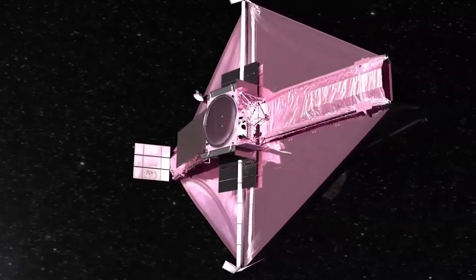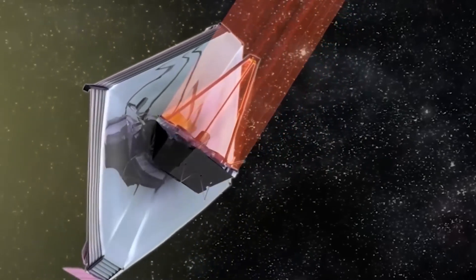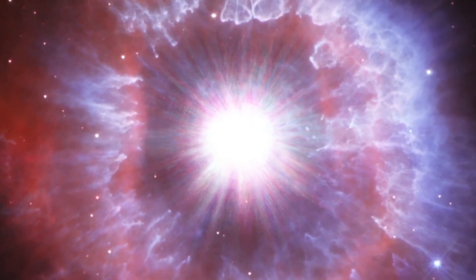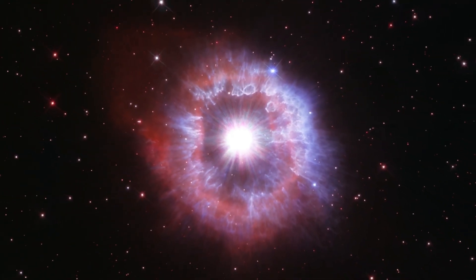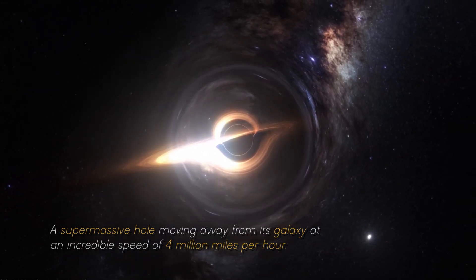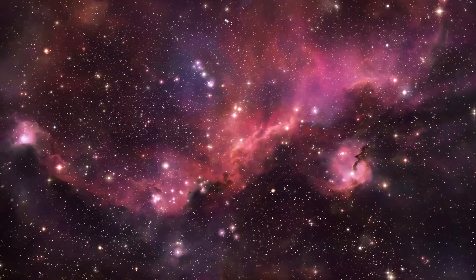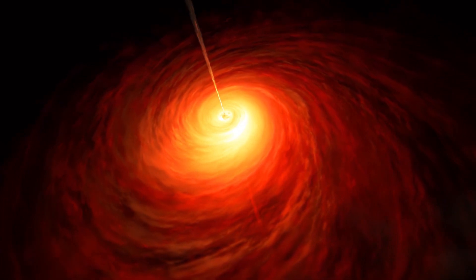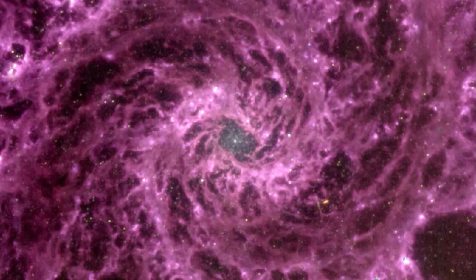In a surprising turn of events, NASA's James Webb Space Telescope has made a discovery that has astronomers around the world in awe. A few weeks ago, the telescope discovered the earliest known galaxy in the universe, but it now has detected something even more massive: a supermassive hole moving away from its galaxy at an incredible speed of 4 million miles per hour. This discovery has very important implications and has generated much speculation among scientists and space enthusiasts about what it means for our understanding of the cosmos.